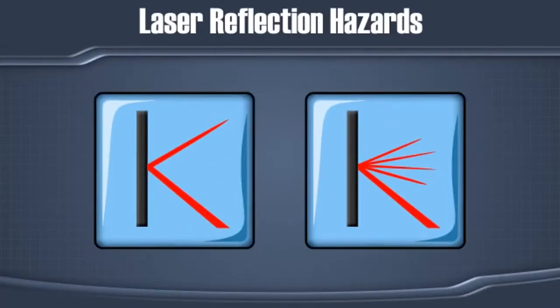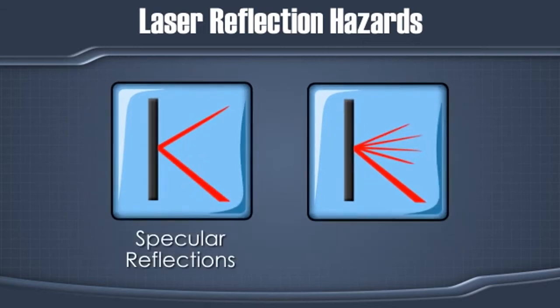There are two types of reflection hazards that are associated with high-powered lasers. These are specular reflections and diffuse reflections.